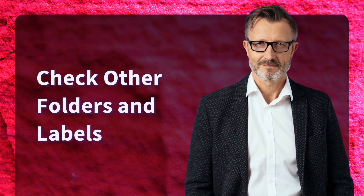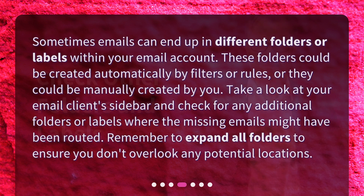Check other folders and labels. Sometimes emails can end up in different folders or labels within your email account. These folders could be created automatically by filters or rules, or they could be manually created by you. Take a look at your email client's sidebar and check for any additional folders or labels where the missing emails might have been routed. Remember to expand all folders to ensure you don't overlook any potential locations.